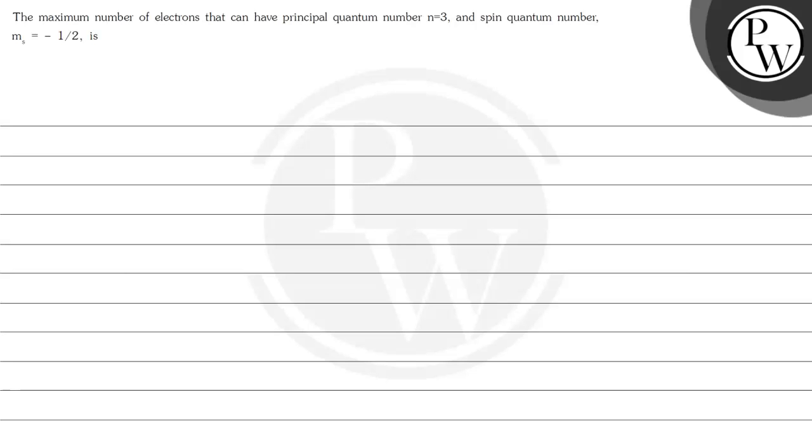Hello, let's see the question here. The maximum number of electrons that have principal quantum number n equals 3 and spin quantum number m_s equals minus half is.